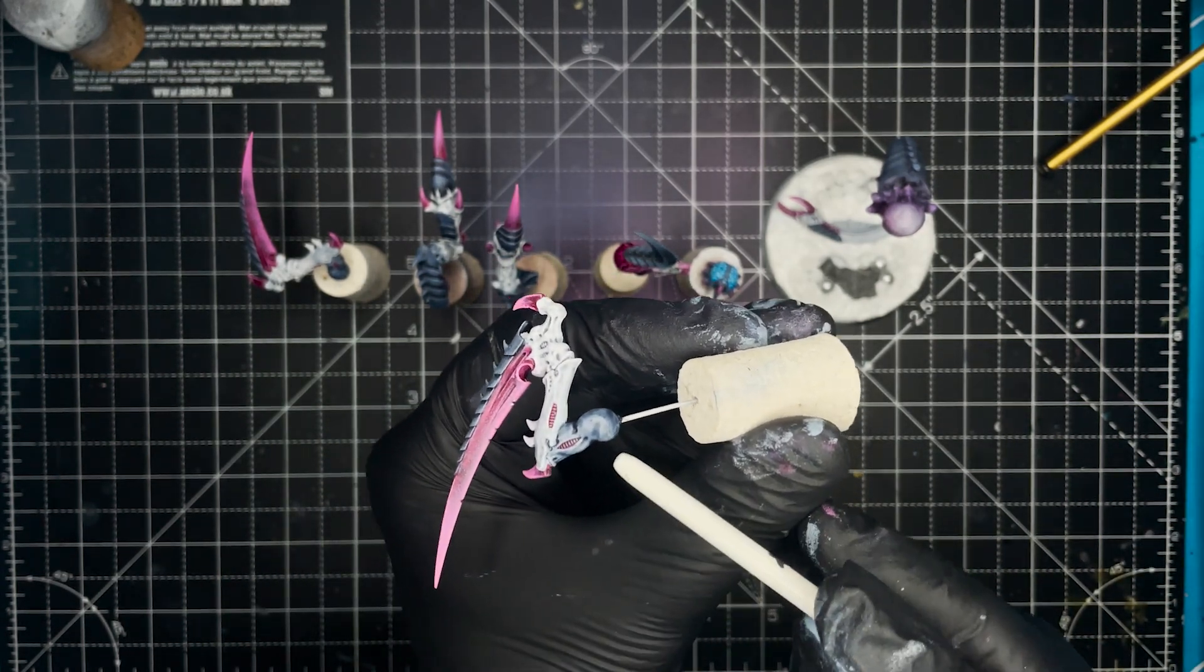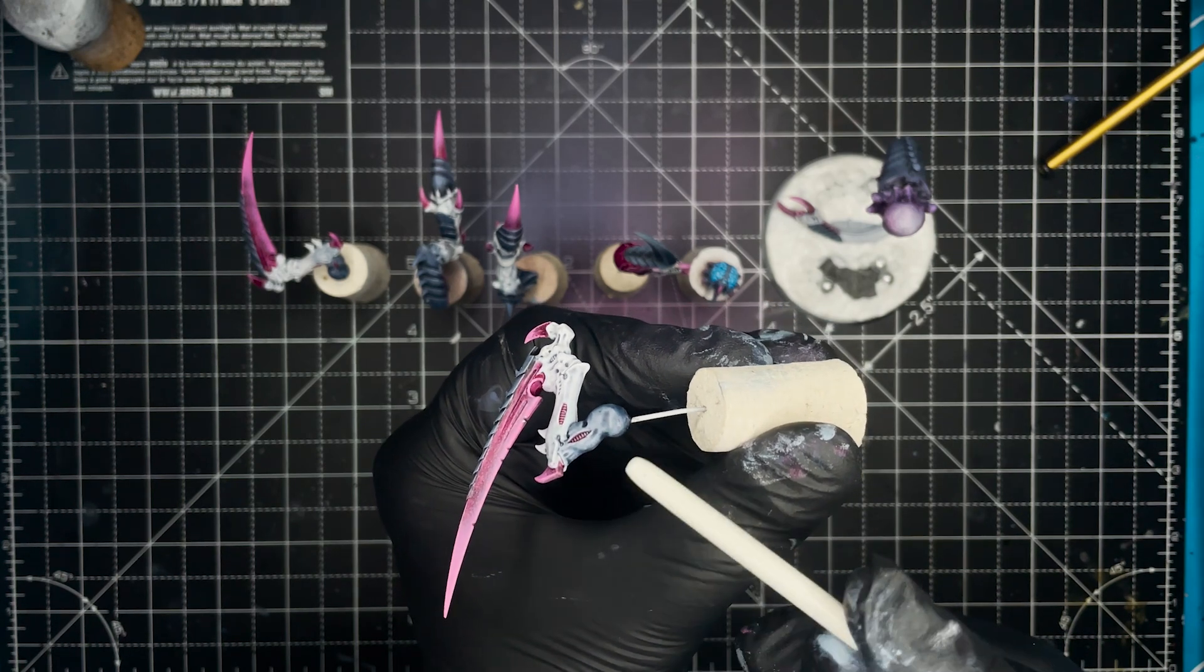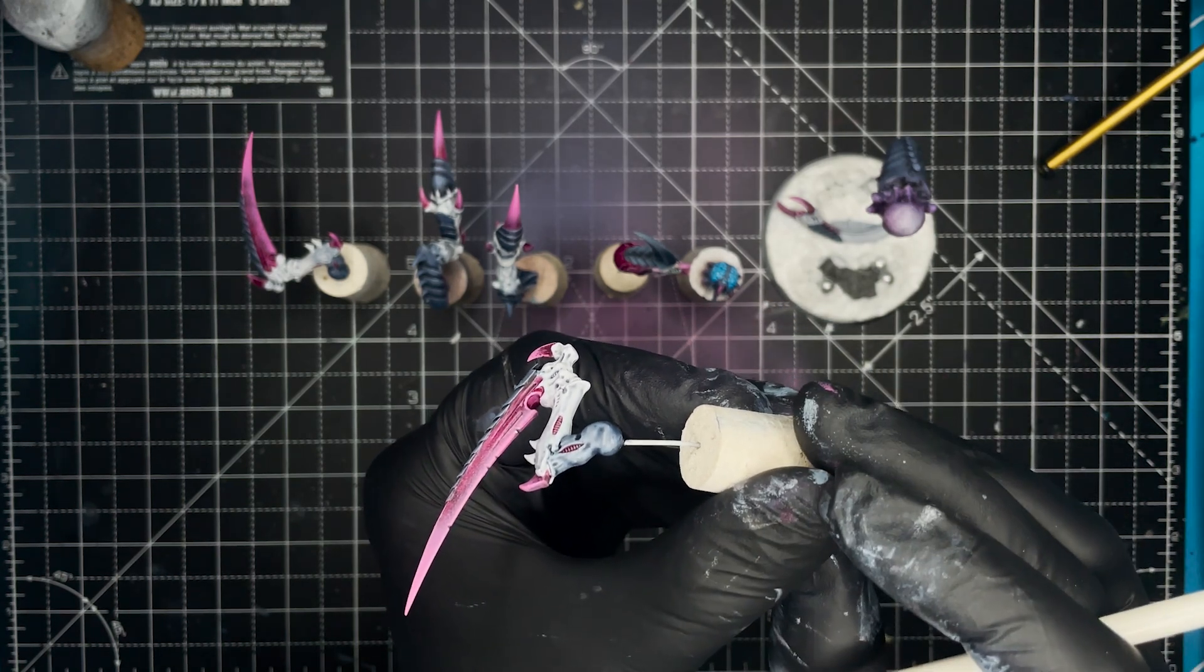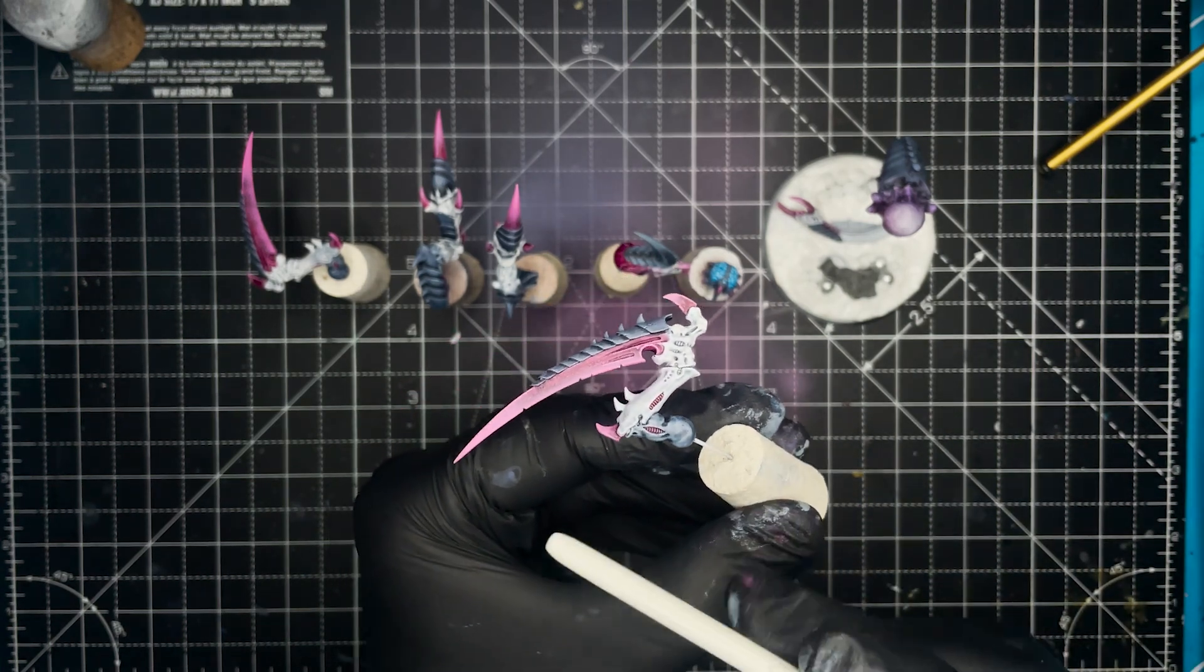I then used Citadel Contrast Space Wolves Grey to feather in all of the limbs on the model, and again I used two coats of this.